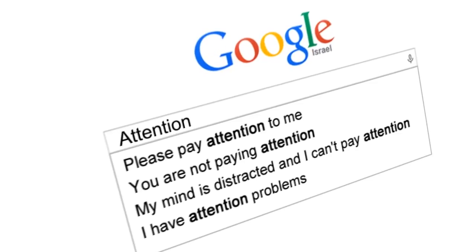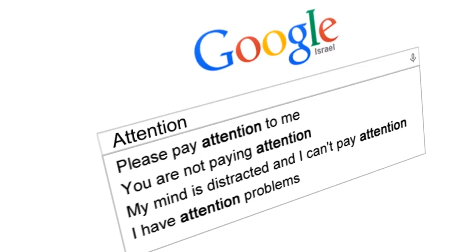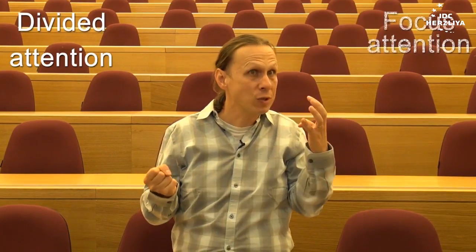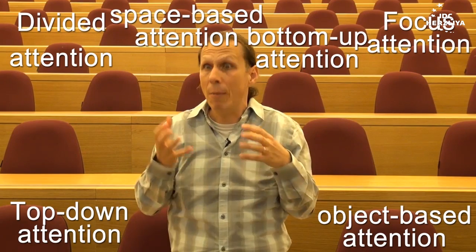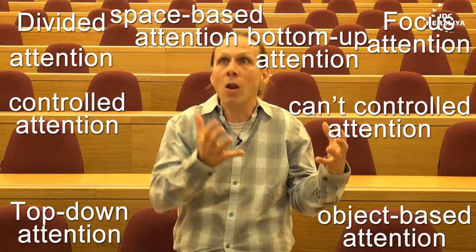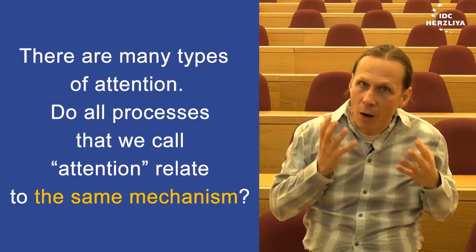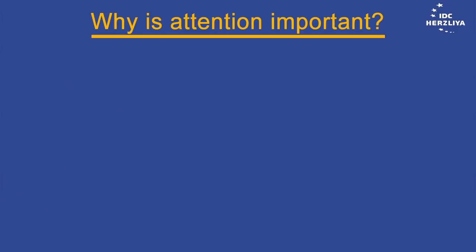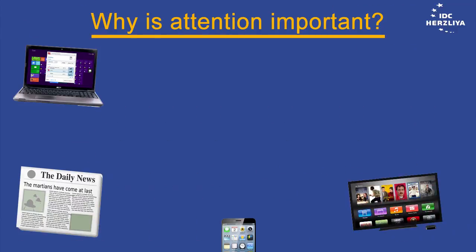It is intuitive for everyone to say 'attention' — it became a very popular term. 'Please pay attention to me,' 'you're not paying attention,' 'my mind is distracted,' 'I can't pay attention,' 'I have attention problems.' But what do we really mean? There are various types: divided attention, focused attention, space-based attention, object-based attention, top-down attention, bottom-up attention — so many types, but are they all the same one?